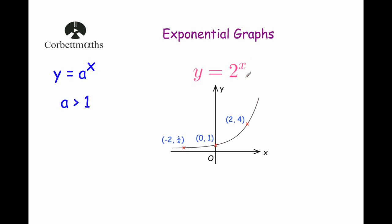On the right-hand side, as our values of x are positive and increasing, the graph would get very big very quickly, because 2 to the power of 1 is 2, 2 squared is 4, 2 cubed is 8, 2 to the power of 4 is 16, 2 to the power of 5 is 32, so the graph would increase rapidly — it would grow exponentially.